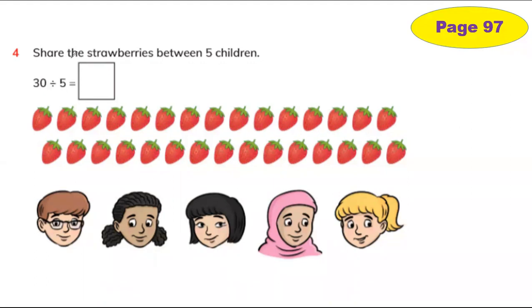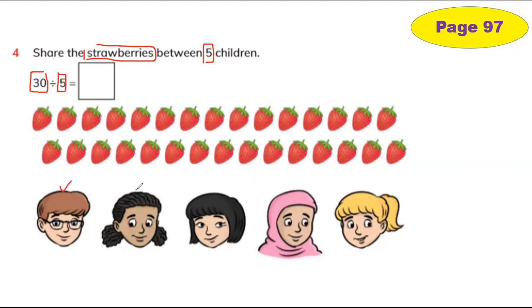Question number four: share — share means you have to give equally, the same. Share the strawberries. Can you find the strawberries? How many strawberries do we have? In this question there are 30 strawberries. Share strawberries between five children — how many children? Five. You can see five children: child one, child two, child three, child four, and child five.